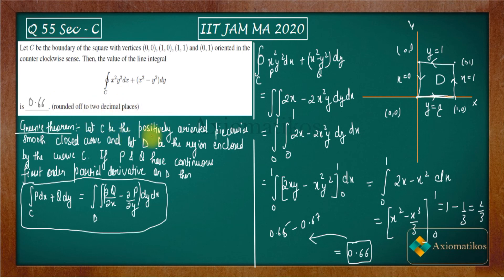This is a completely easy question, totally dependent on Green's theorem, and it is a two-mark question. Sometimes part C questions are very easy because they are just calculation-based. Thank you.